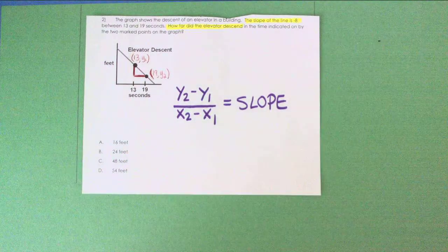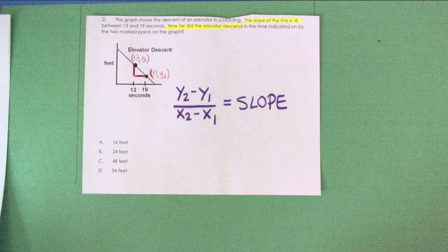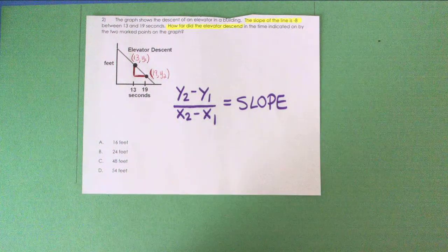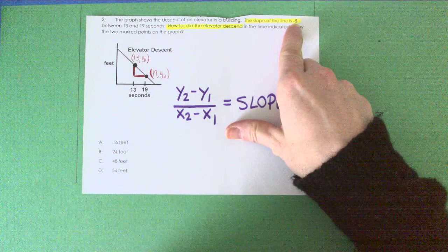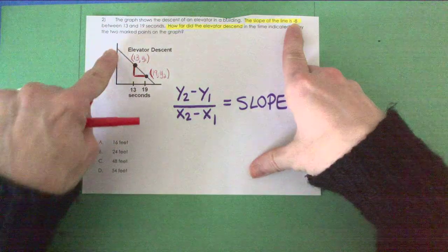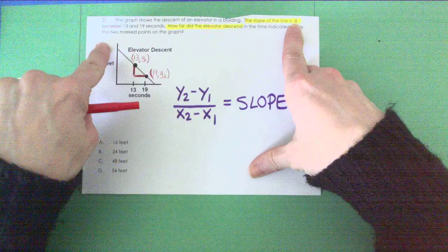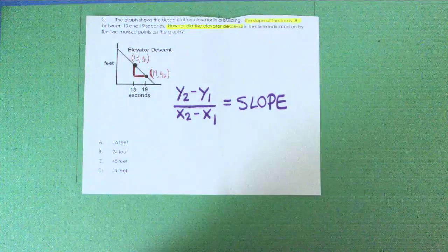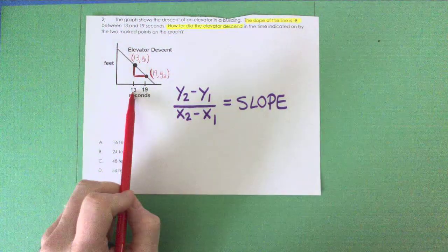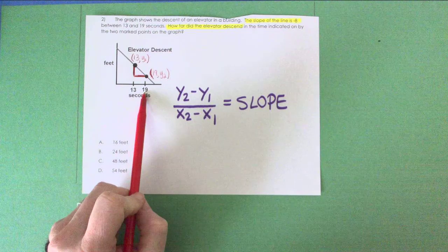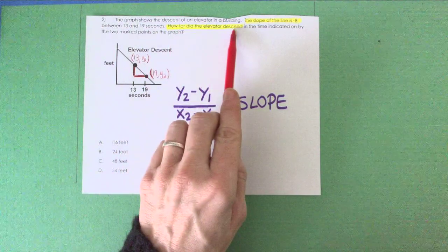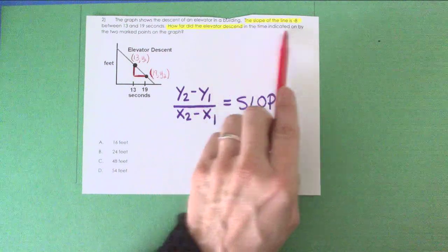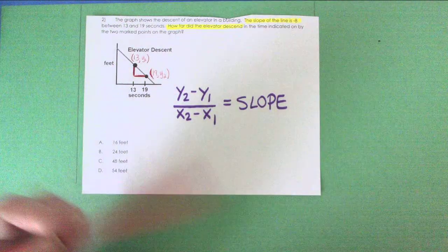This question said the graph shows the descent of an elevator in a building. The slope of the line is negative eight. I highlighted that. So the slope of this line right here is negative eight, and this is happening between 13 and 19 seconds.